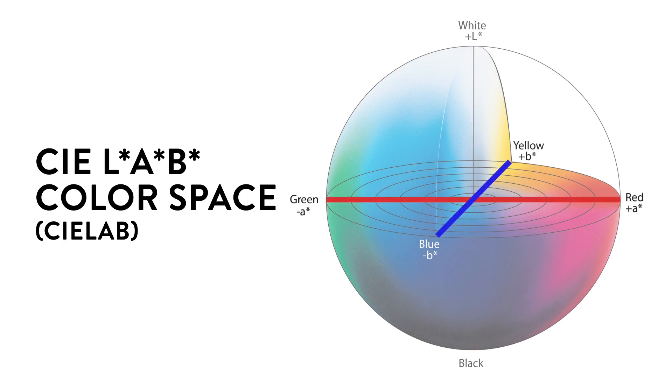A star and B star axis are the color direction with 0 being neutral gray. The A star axis represents red to green, with red in the positive extreme and green in the negative extreme. The B star axis represents yellow to blue, with yellow in the positive extreme and blue in the negative extreme.